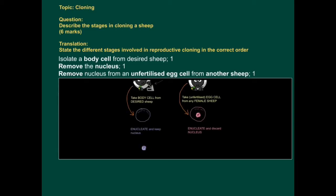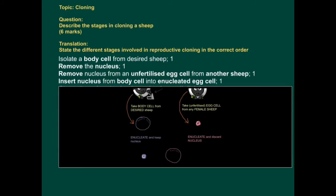We basically want to take the egg cell but without the nucleus. So we're going to enucleate and discard the nucleus. Enucleate means remove the nucleus. So you can see here that I've just got the egg cell without the nucleus.